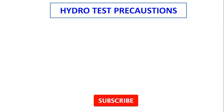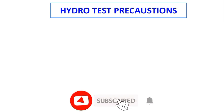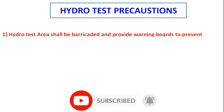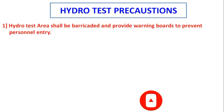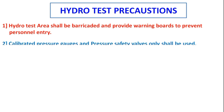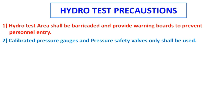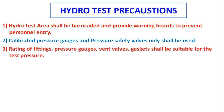Hydro testing precautions: the hydro test area shall be barricaded and warning boards provided to prevent unauthorized personal entry. Calibrated pressure gauges and pressure safety valves only shall be used. The rating of fittings, pressure gauges, vent valves, and gaskets shall be suitable for the test pressure.